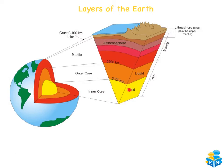The inner core has extremely hot temperatures that rise up to 5,000 degrees Celsius. It's solid because of the immense pressure and consists mainly of iron and nickel. Then you've got the outer core, which is mainly liquid or in a molten state because there's less pressure, and it consists mainly of iron.